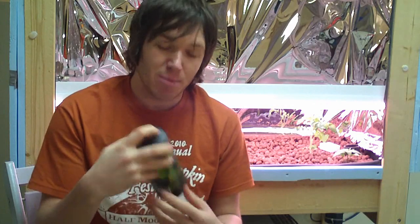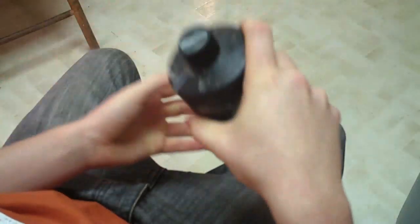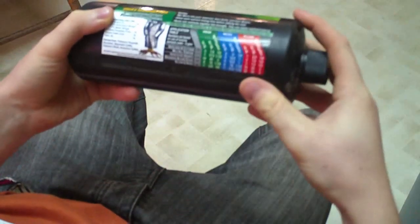The nutrient I'm using is a three-part formula - there's a grow, a micro, and a bloom. If you just look on the back of the bottle you'll usually see a grow chart that tells you how much to mix of each. Let's take a closer look at the chart here that's on the label.